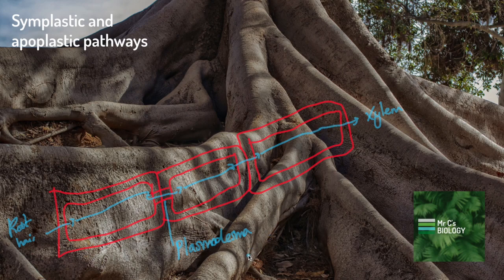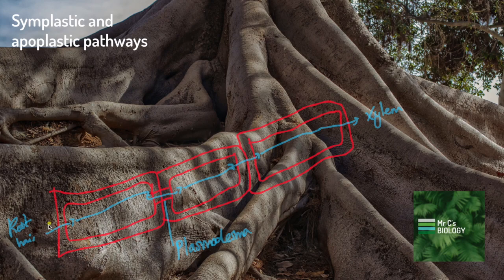Very straightforward. That's the symplastic pathway through the cytoplasm. The other pathway is the apoplastic pathway.